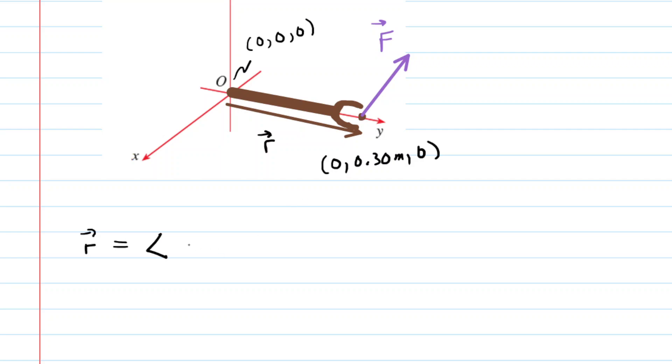So for example, taking the x coordinates, we would have 0 minus 0. For the y coordinates, we would have 0.30 meters minus 0. And the z coordinates would be 0 minus 0. And if we clean this up, we can see that the position vector of the wrench is <0, 0.30 meters, 0>. So that's one piece of information we're going to need.